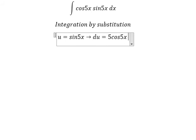So I will put u equal to sine 5x. Later that, we do first derivative for both sides. We have du equal to 5 cosine 5x dx.